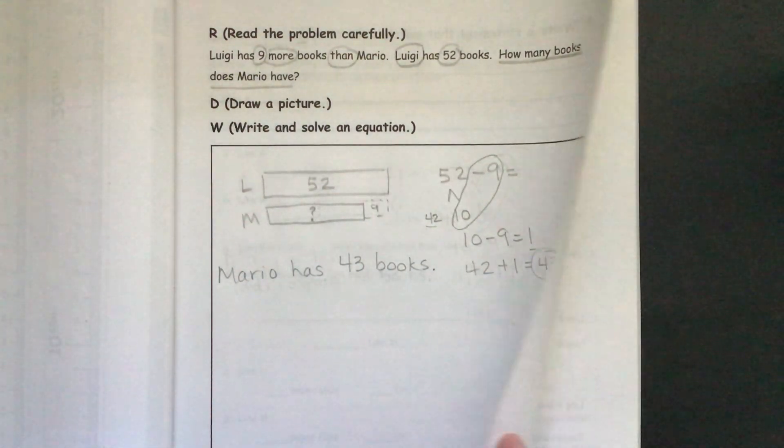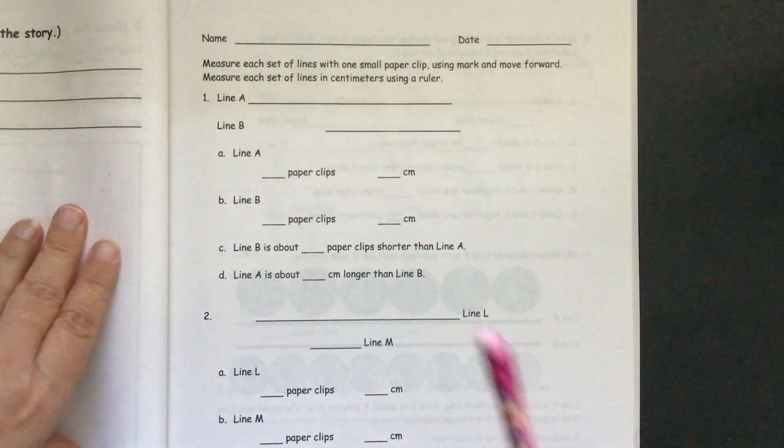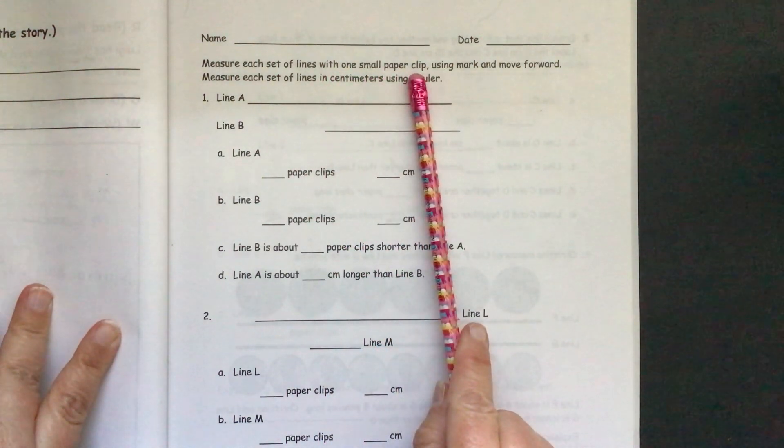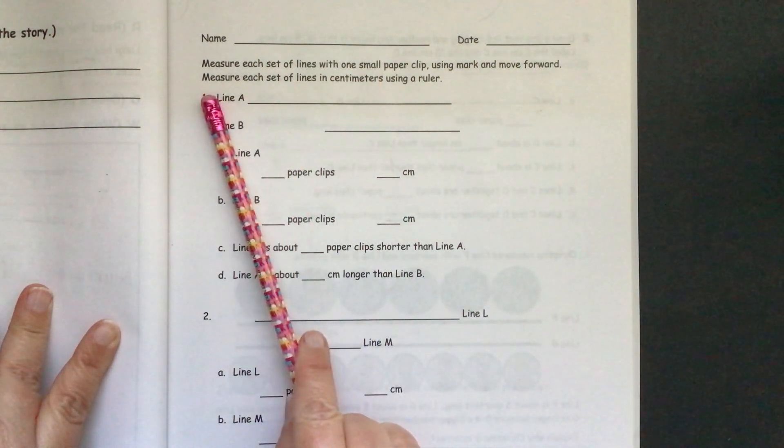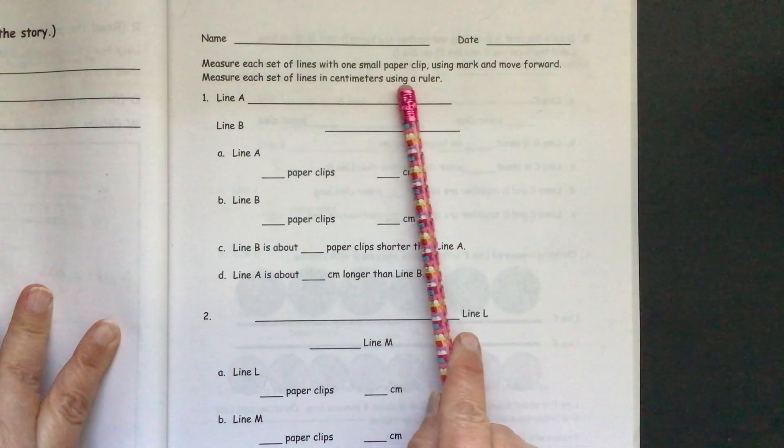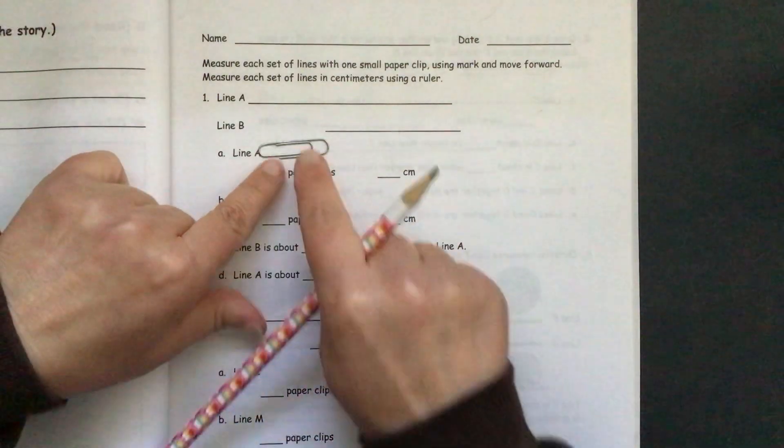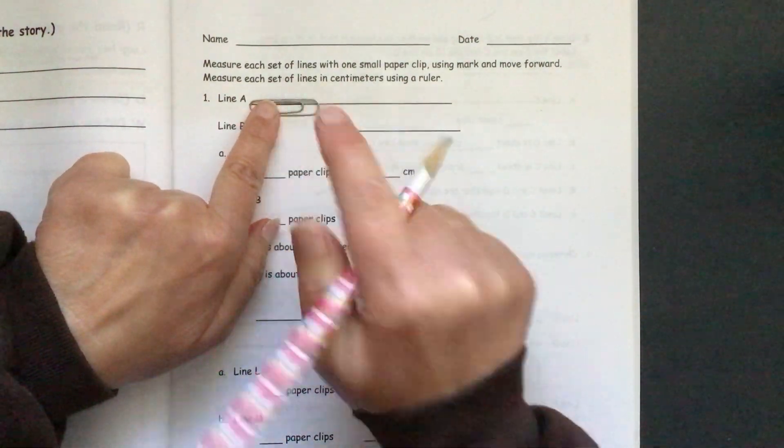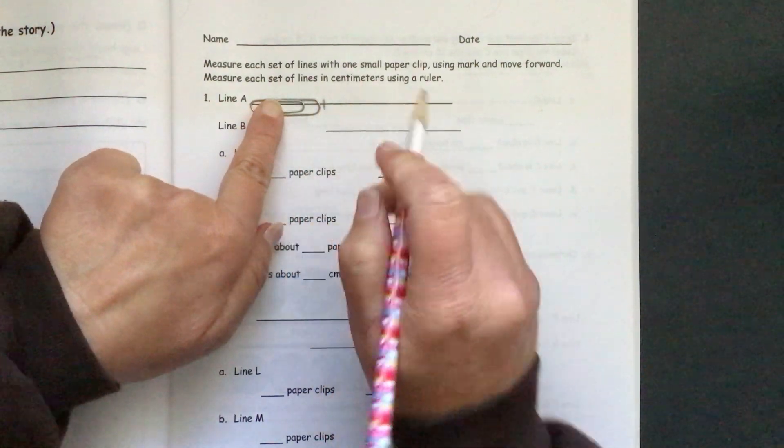We're going to move on to our problem set. The directions read: measure each set of lines with one small paper clip. Use, mark, and move forward. Measure each set of lines in centimeters using a ruler. So I have my small paper clip here. And we'll get the most round part to the most round part. Do a mark and measure.